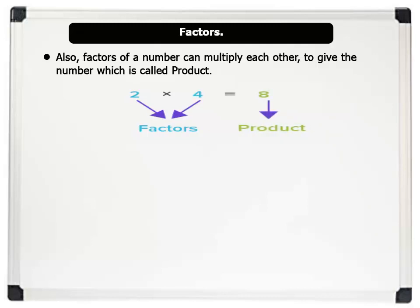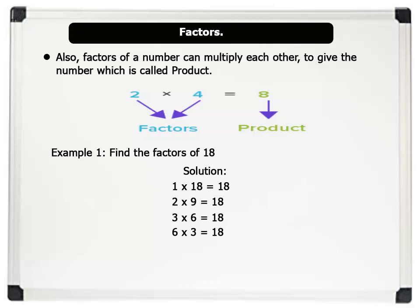Let us solve some problems. Example 1: Find the factors of the number 18. Solution: 1 times 18 equals 18, 2 times 9 equals 18, 3 times 6 equals 18, 6 times 3 equals 18, 9 times 2 equals 18, and 18 times 1 equals 18.